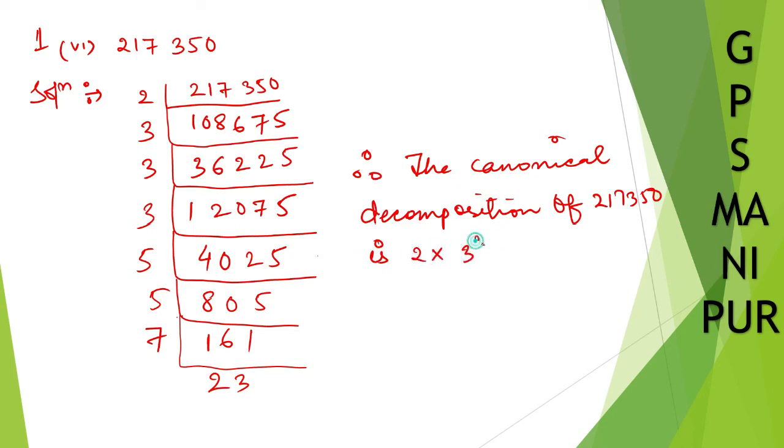Into 3, into 3, that is 3 cubed, into 5, into 5, that's 5 squared, into 7, into 23. So this is your answer.